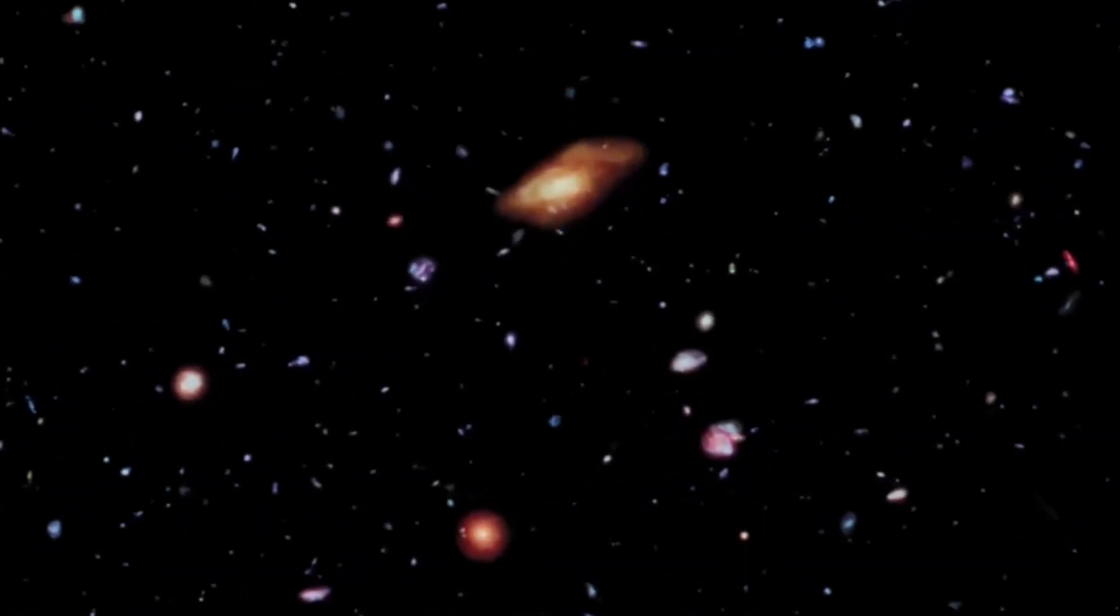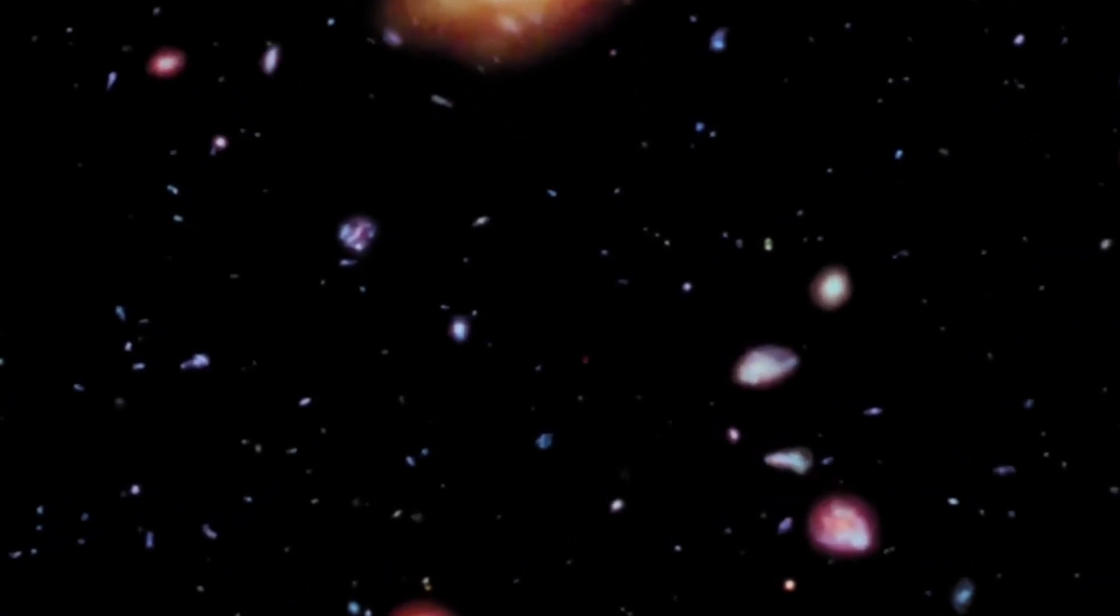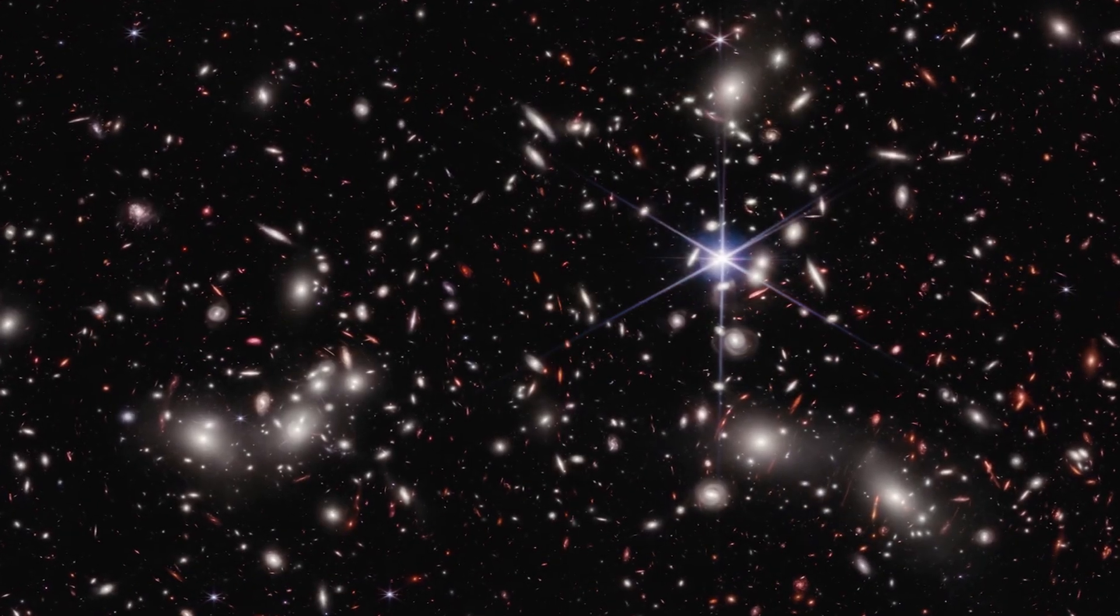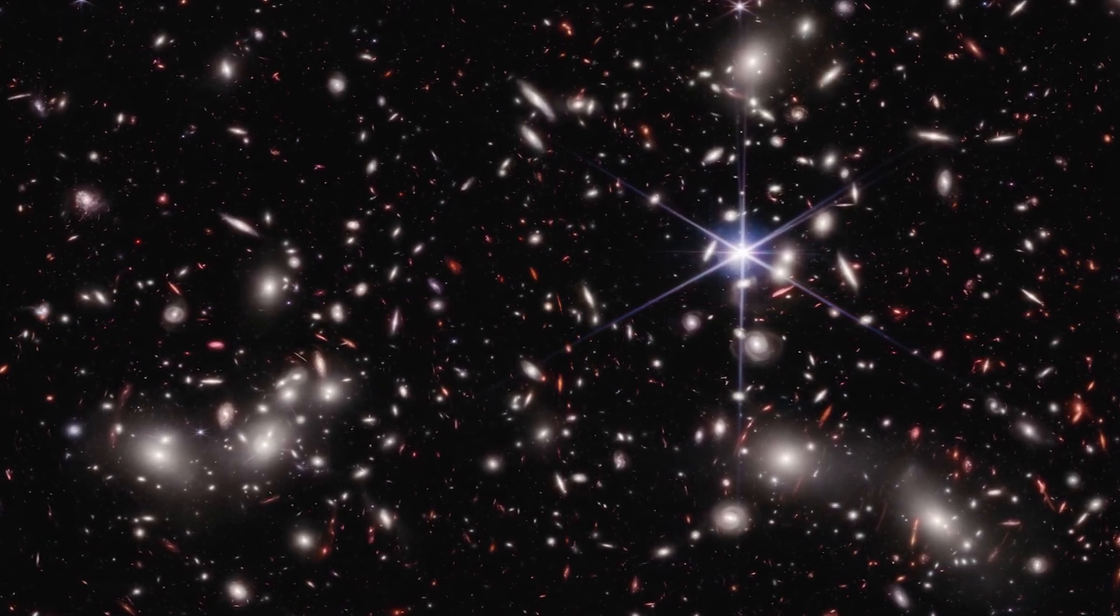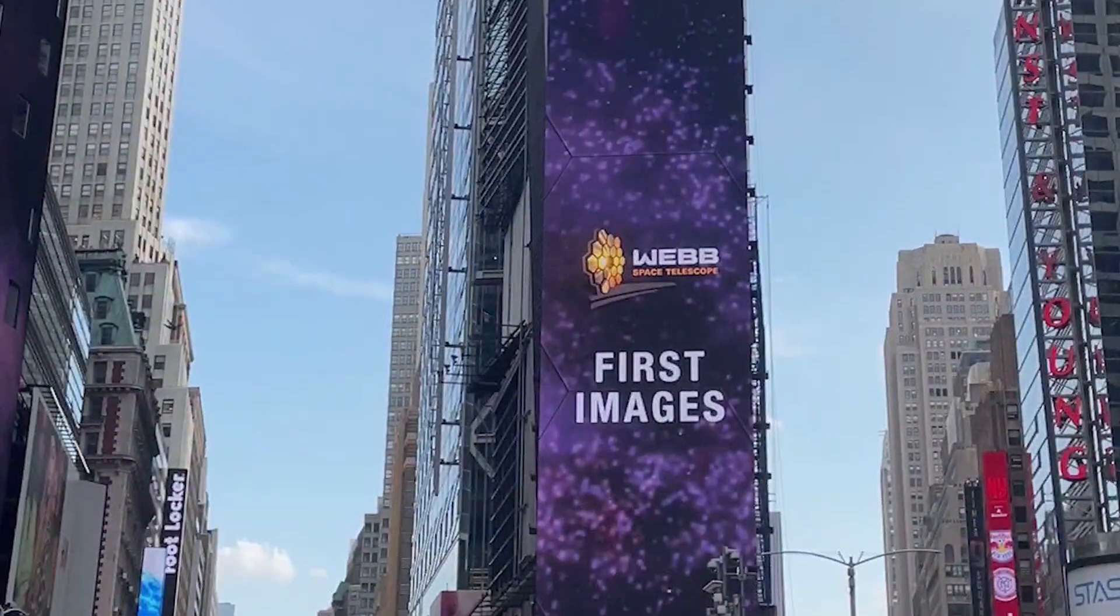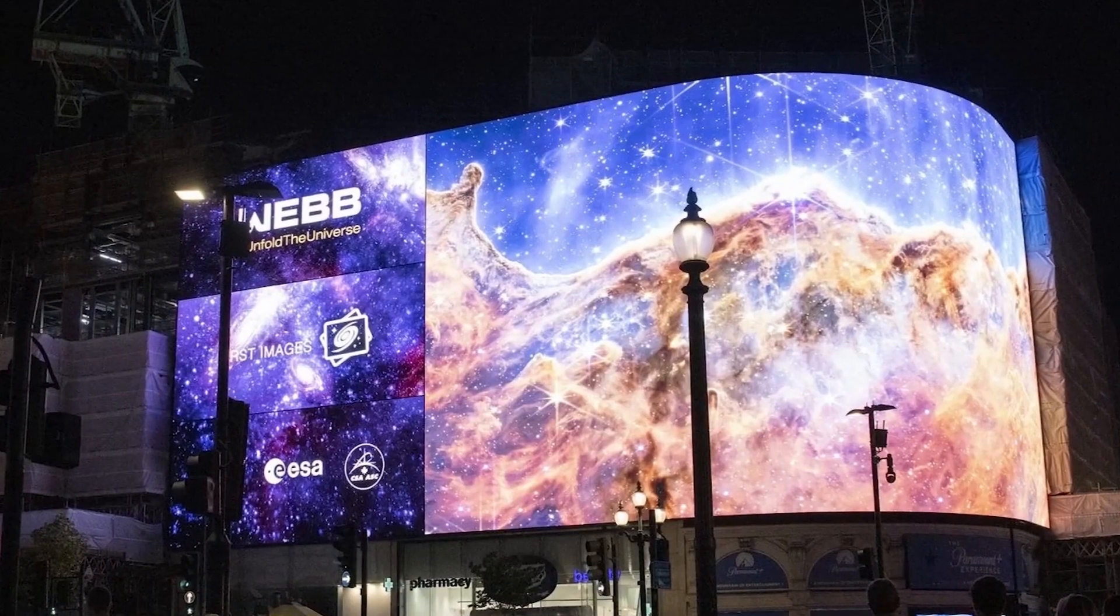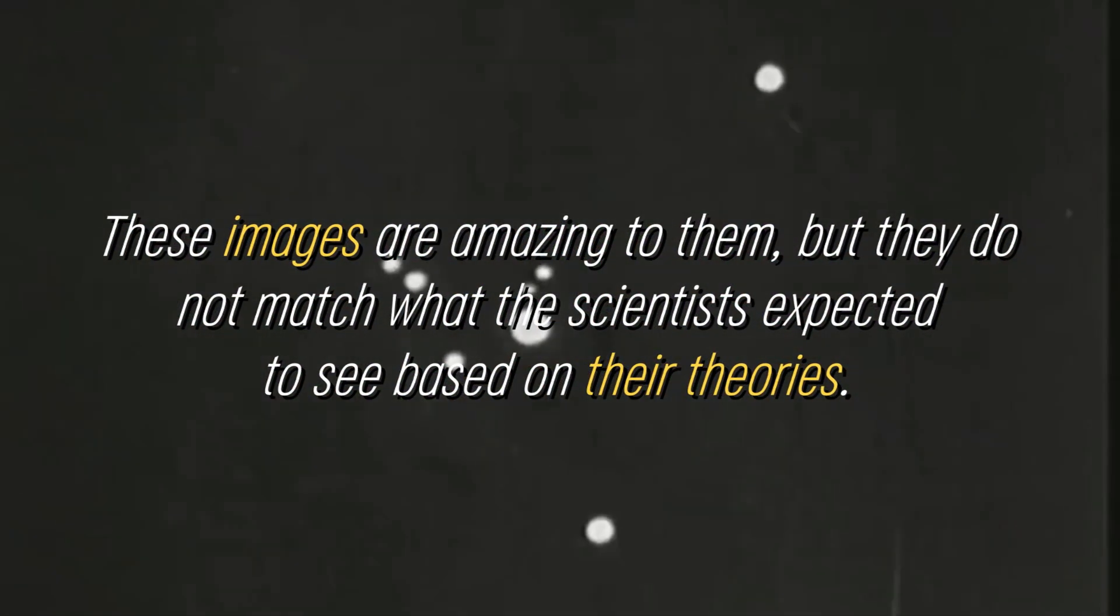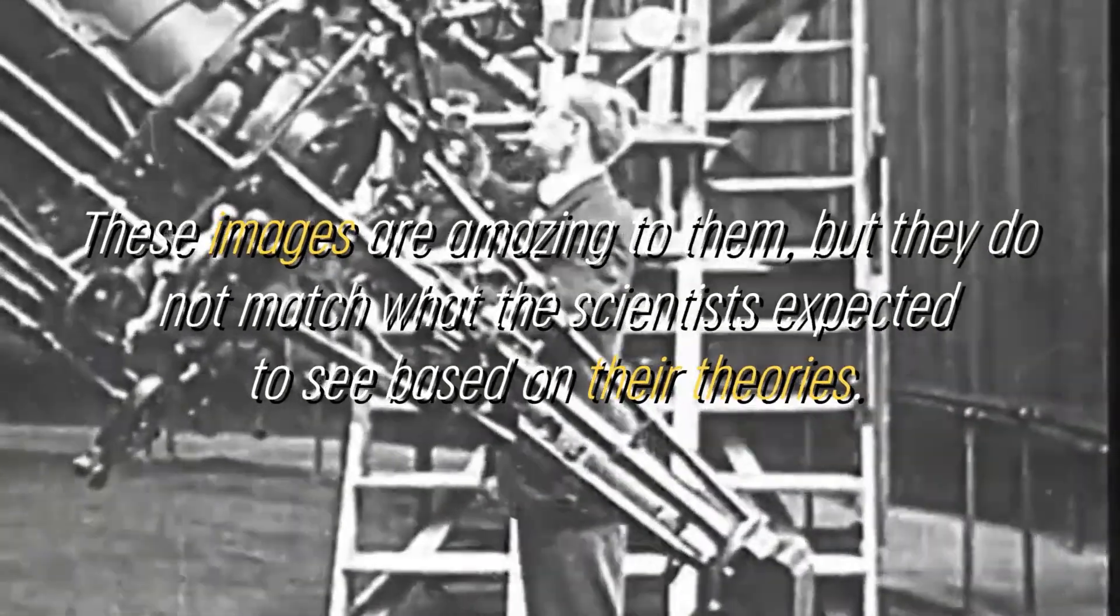The images of new galaxies captured by the James Webb Telescope are absolutely stunning. In a single image, we can see hundreds of galaxies, all together, and the beauty and power of these photos are stunning, something that cannot be overlooked. However, what seems to amaze the average person is precisely the opposite for researchers. These images are amazing to them, but they do not match what the scientists expected to see based on their theories.